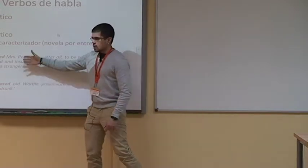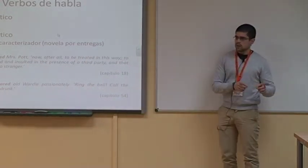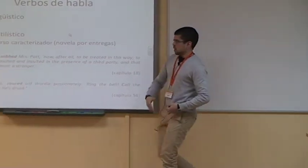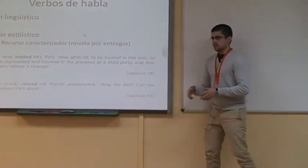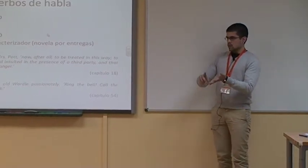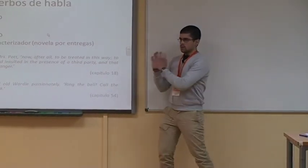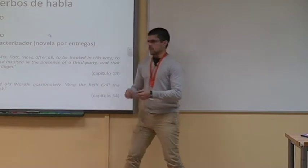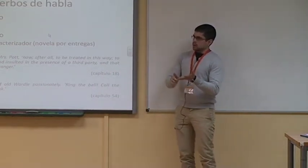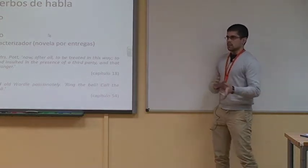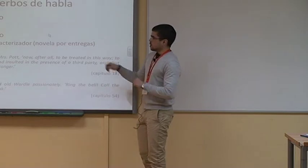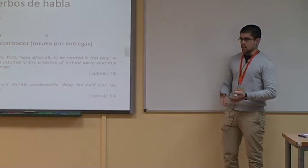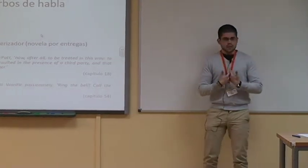En el caso concreto de Pickwick Papers, verbos como sob —que sería algo así como sollozar— solo se asocian a los actos de habla de mujeres. Las mujeres sollozan y los hombres rugen. No solo en Pickwick Papers —mi tesis doctoral va precisamente sobre eso— y verbos como roar, growl, thunder solo aparecen introduciendo los actos de habla de hombres en las 14 novelas canónicas de Dickens. Mientras que las mujeres son las que sollozan, las que screaman, chillan de un modo histérico, las que whine, lloriquean, o pout, hacen pucheros, y nunca al revés. En el caso de las novelas por entregas, donde hay limitaciones de tiempo y espacio, puede resultar útil para caracterizar a los personajes.